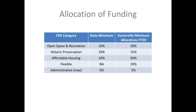For FY20, the committee allocated 20% to open space, 15% to historic preservation, 50% to affordable housing, and 10% to flexible funding. The flexible funding is the only fund that can be used for the three eligible categories of open space, affordable housing, and historic. Having flexible funding allows the community preservation committee to respond to changes in demand.